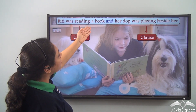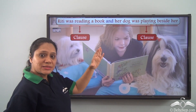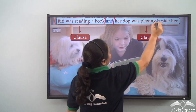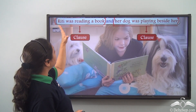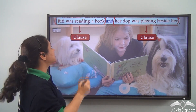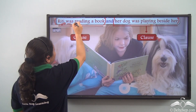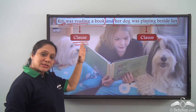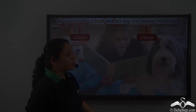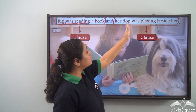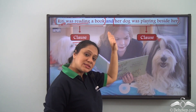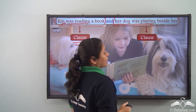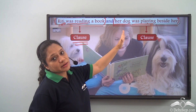Now let us look at this sentence: Riti was reading a book and her dog was playing beside her. This sentence can be broken down into Riti was reading a book and her dog was playing beside her. The first part, Riti was reading a book, has a subject — Riti — a verb — was reading — and is conveying complete sense, so this part is a clause. The second part, her dog was playing beside her, has a subject — her dog — a verb — was playing — and makes complete sense, so this part is also a clause.